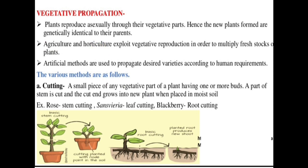This method is mostly used in agriculture and horticulture to increase plant production. Whether it is flower production or fruit production, vegetative reproduction is used to increase growth. It is a fast method used in agriculture and horticulture.